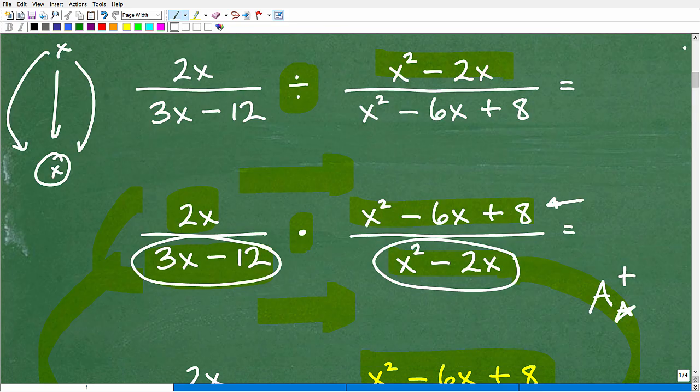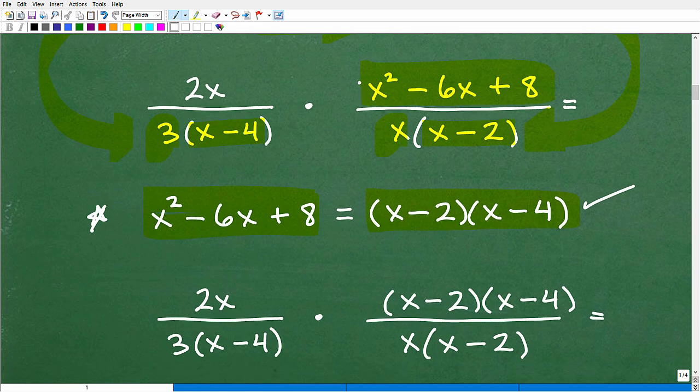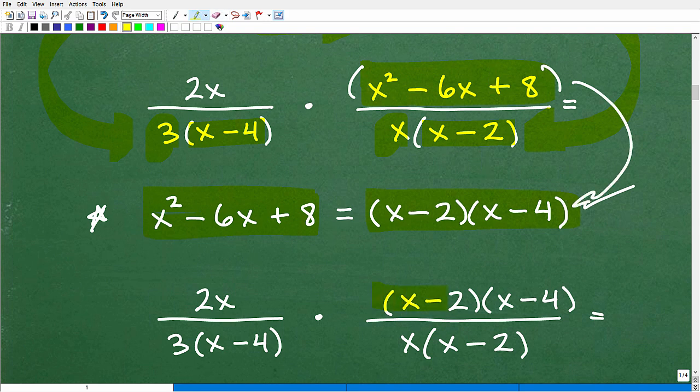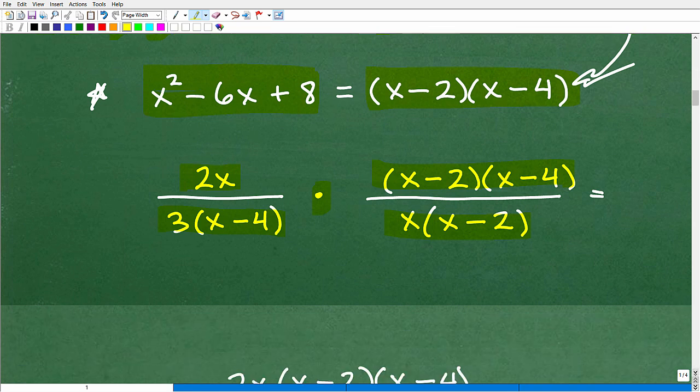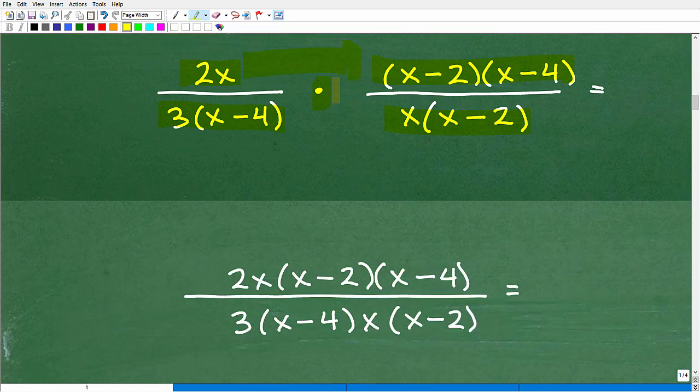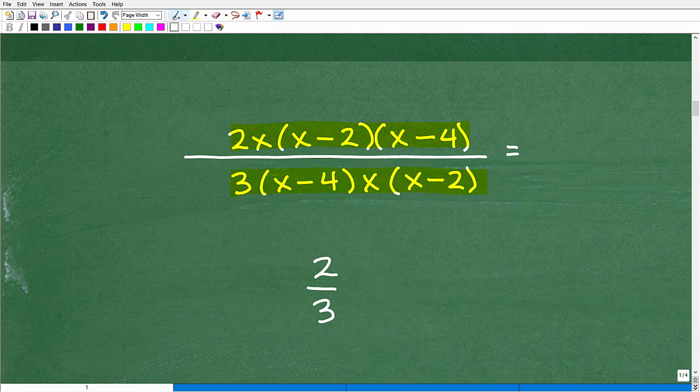So now we've determined this x squared minus 6x plus 8 factors like this. I can just replace this numerator with its factors. So now we want to look at the entire problem with its factors. Now we can multiply. But when we multiply, really what we're going to do is put this under one big fraction bar. So when I multiply across, this is going to be 2x times x minus 2 times x minus 4, and then 3 times x minus 4 times x times x minus 2. I can write this like this.